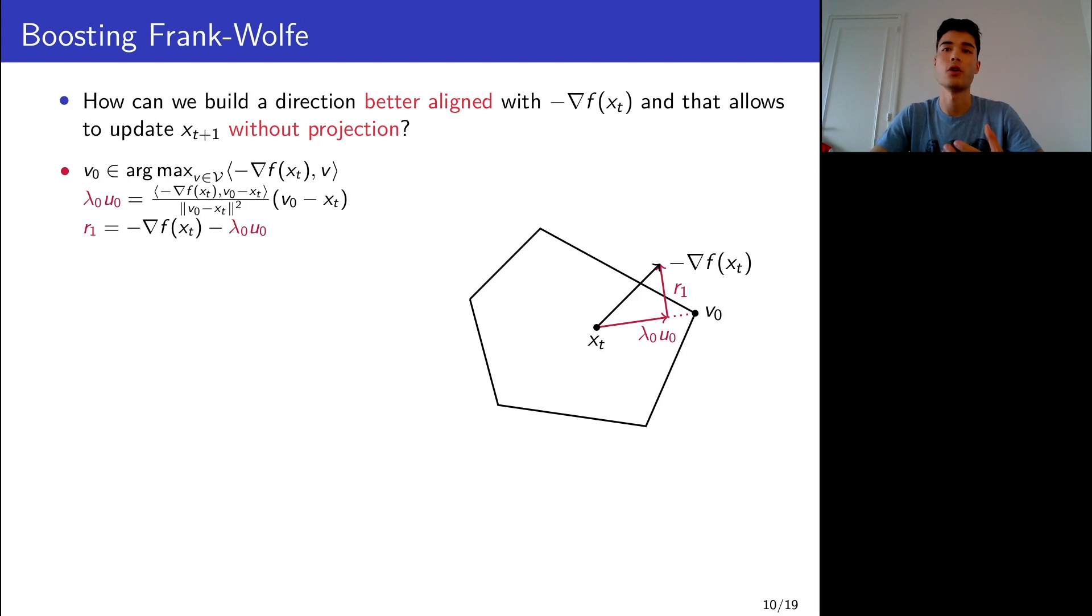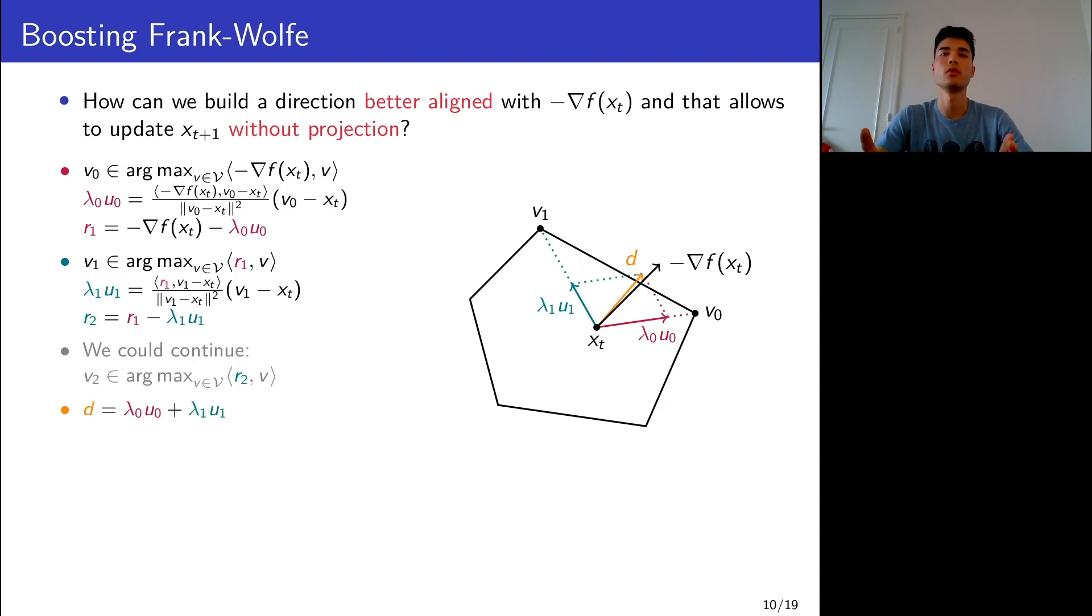We can see that the Frank-Wolfe direction v₀ - x_t is not very well aligned with the negative gradient, and that is because the residual is large. If you want to better align the descent direction of Frank-Wolfe with the negative gradient, you want to close this residual. So what you do is you do another round of linear minimization on this residual. This gives you a new projection and a new residual, and then you can iterate again. But if you already stop here, you can see that by summing the two projections—and note that these projections are just an inner product, so very easy to compute—you obtain a vector d that is already very well aligned with the negative gradient.